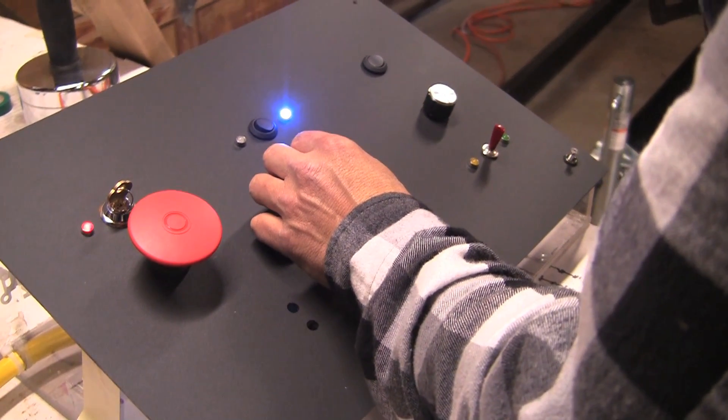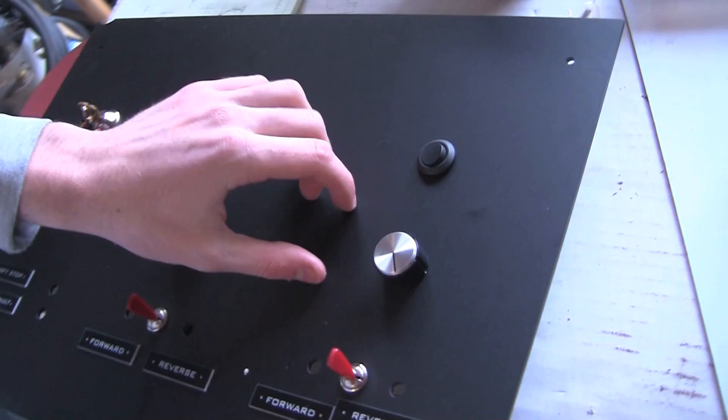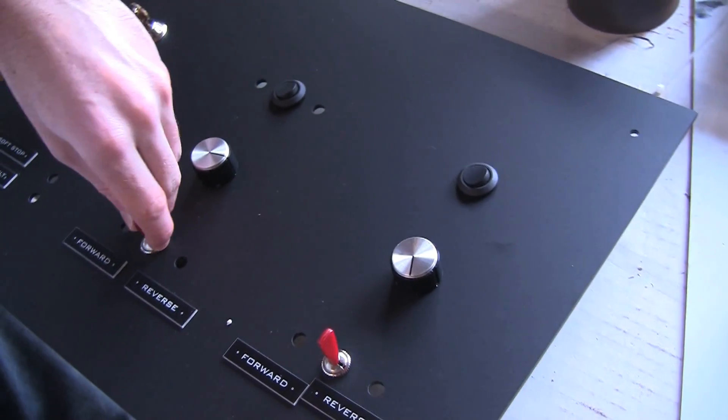These are dials for manual motor control. This is the roll motor. This is the pitch motor and so this will control forward or reverse.